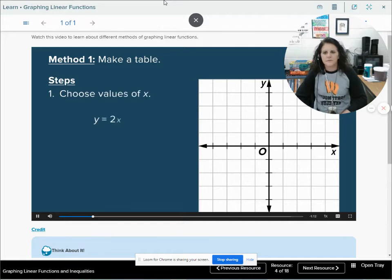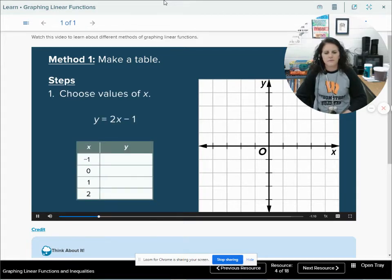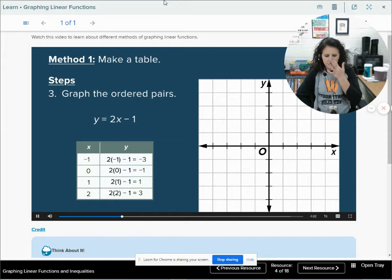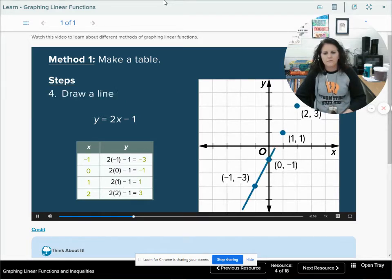There are several methods of graphing linear functions. One is by making a table. Start to build a table by choosing several values of x. Then complete the table by evaluating the function for each value of x. Use the x and y values from the table to graph the ordered pairs. Then draw a line through the points.